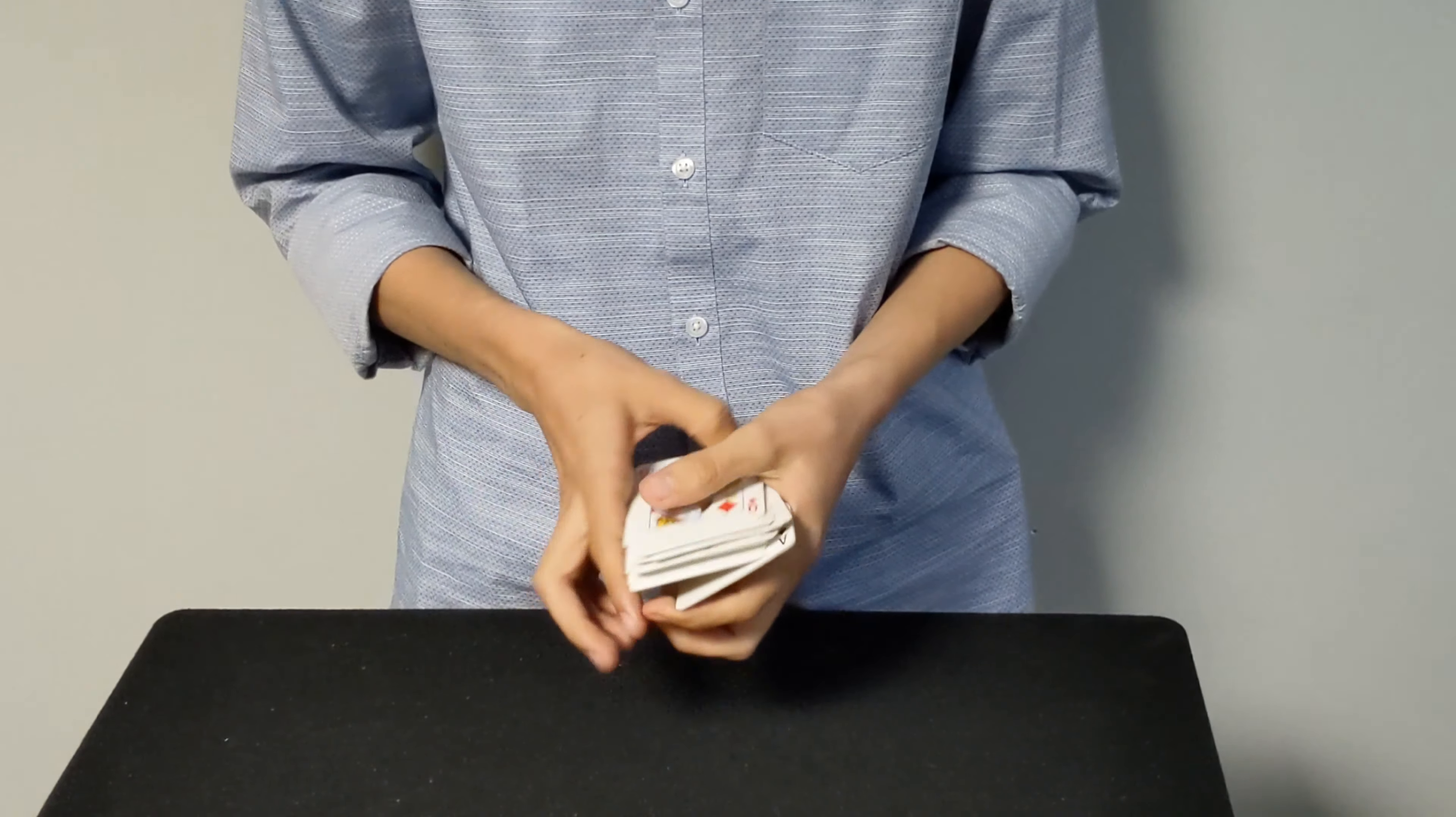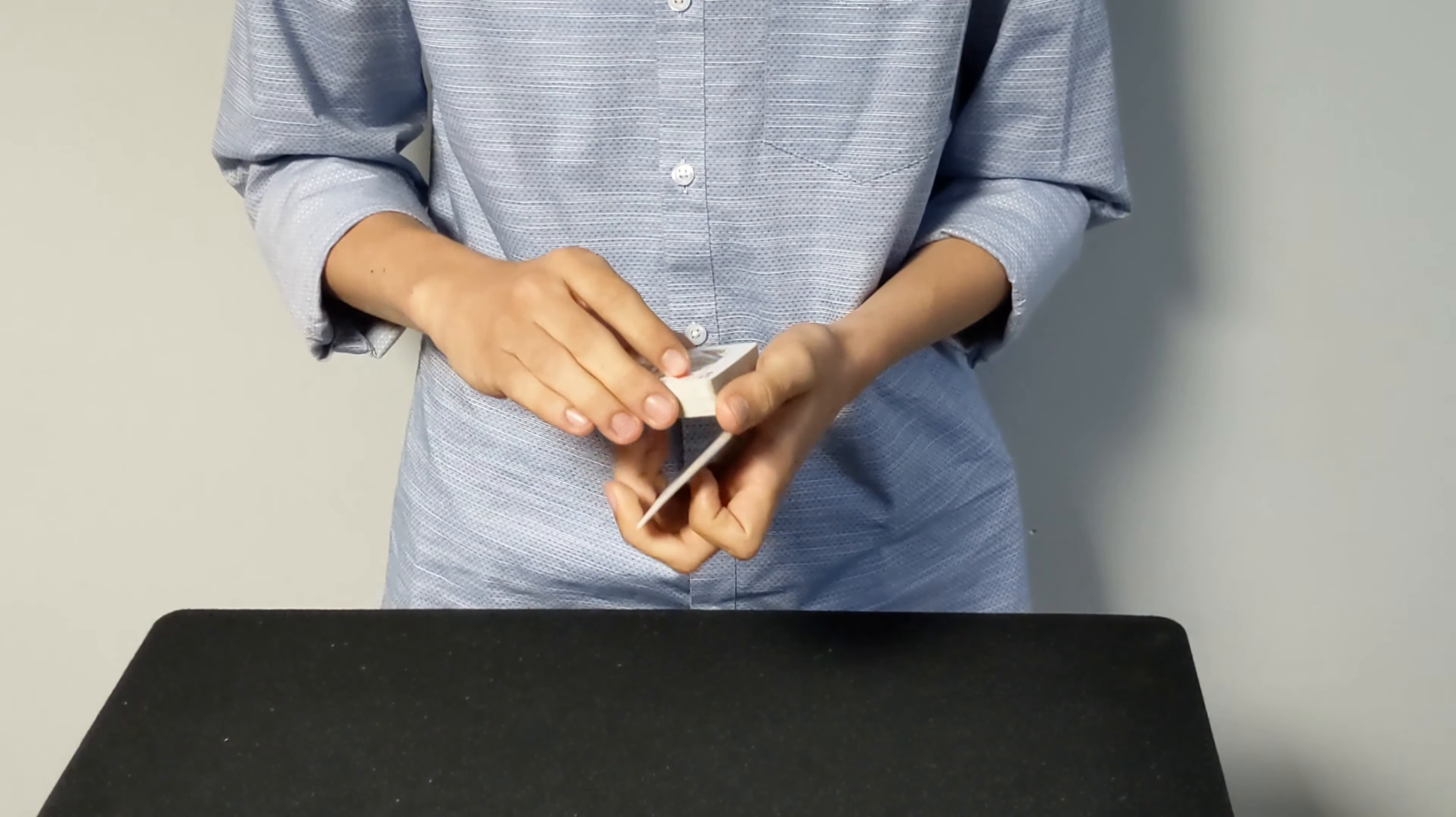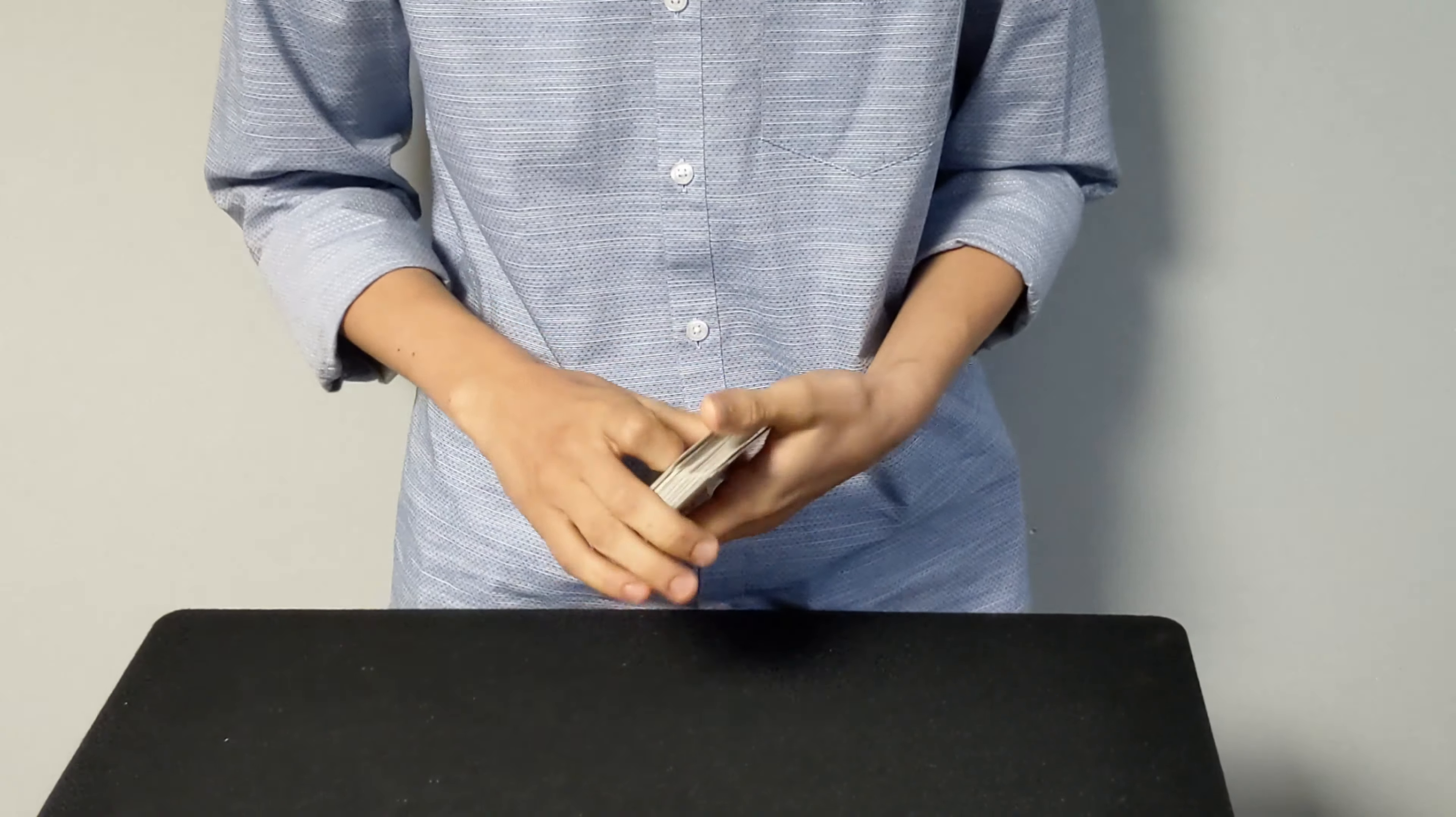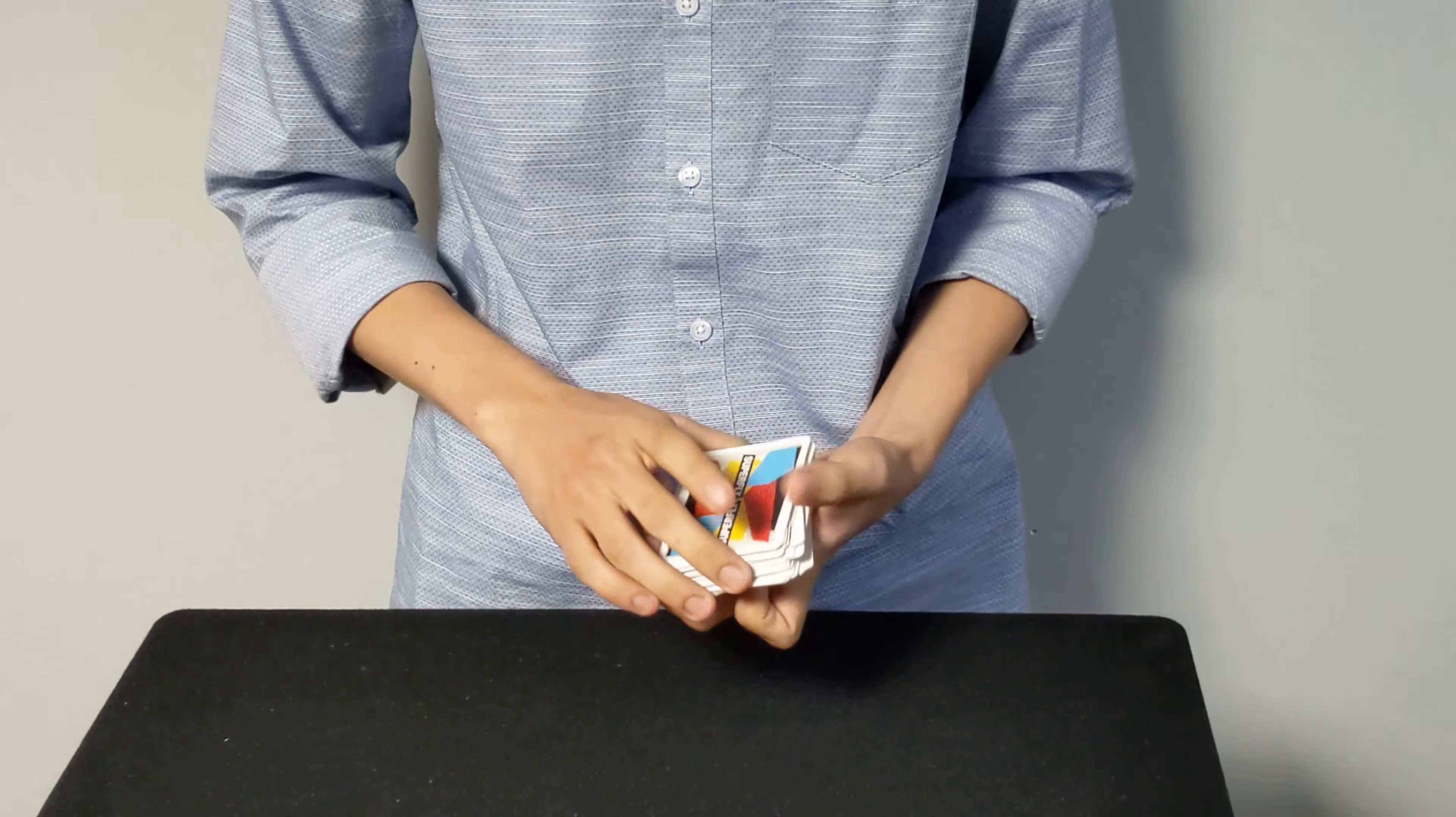What I would do personally, instead of doing a double undercut because it shows more cutting and more things involved, is I would keep it simple. So you've gone through now and shown all the cards that are all different. What I would do is I'd catch a break right here at the very beginning under these five cards and I would do a turnover pass. Now a turnover pass as well I do have a tutorial for. Again, I'll link it up in the description. But the basics of it is you're going to be taking this and flipping it like that.